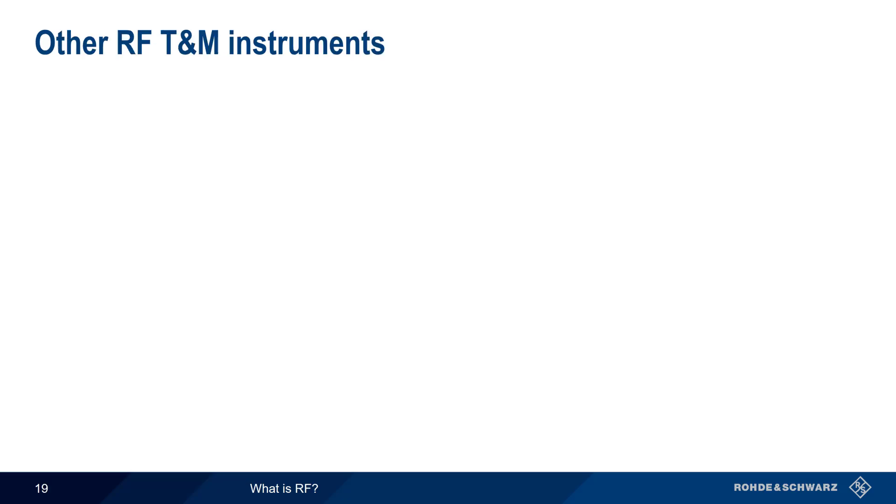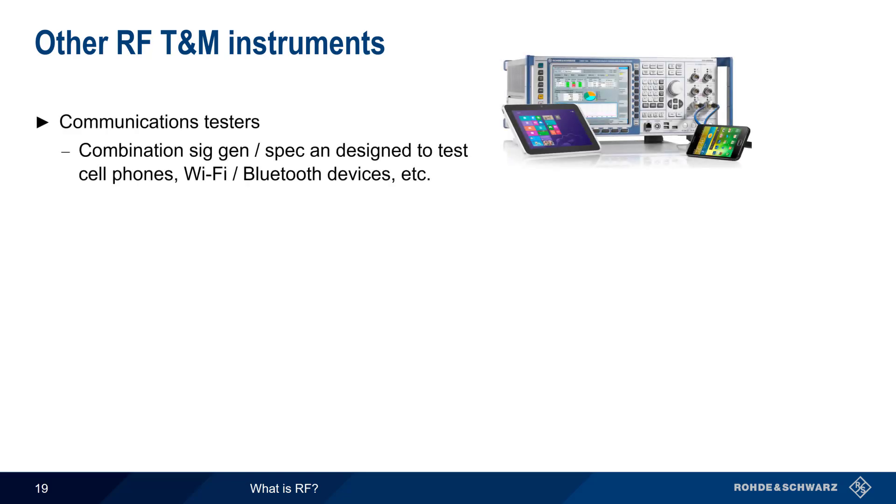In addition to the four categories we mentioned earlier, there are many other types of RF test and measurement instruments. Communications testers are something of a combination of a signal generator and a spectrum or signal analyzer. These testers can emulate a wireless device, a wireless access point, or a cellular base station, and allow both voice and data testing.